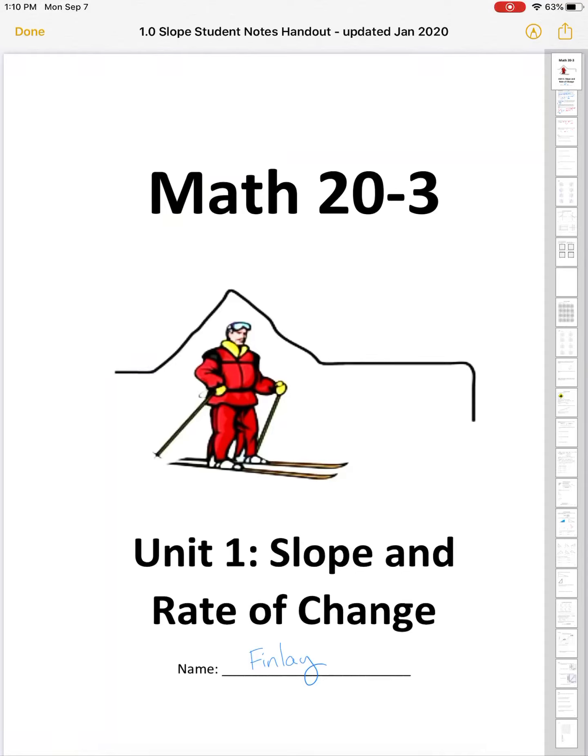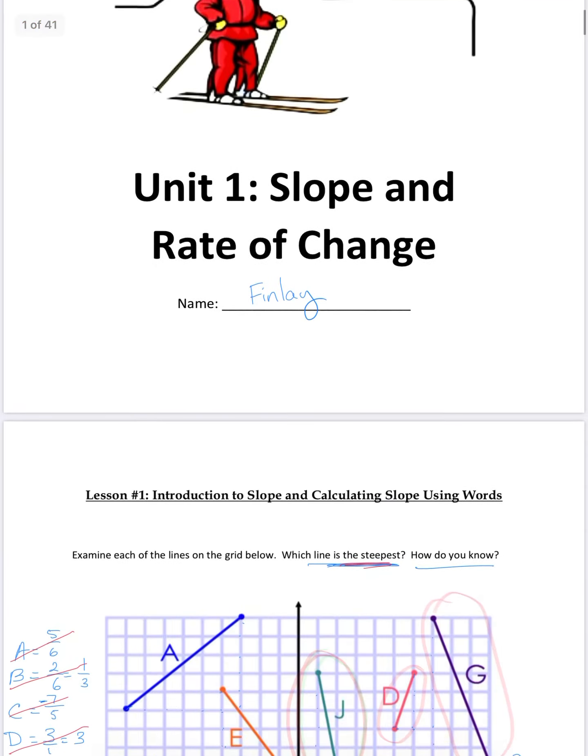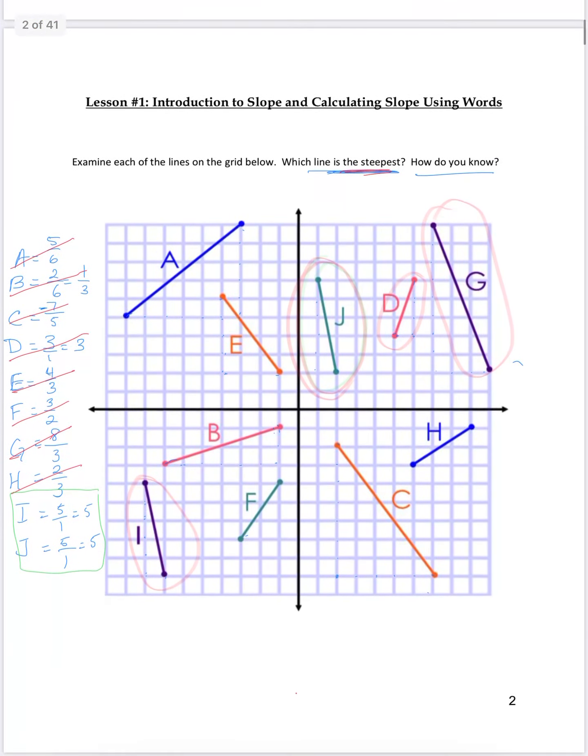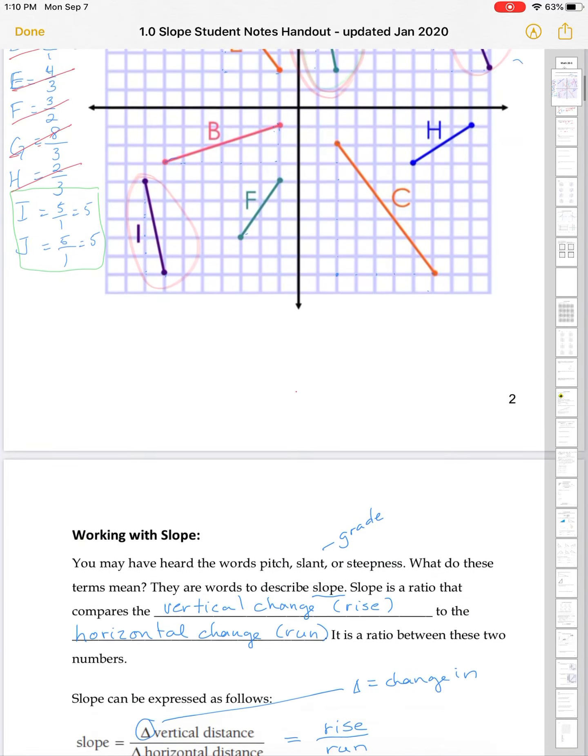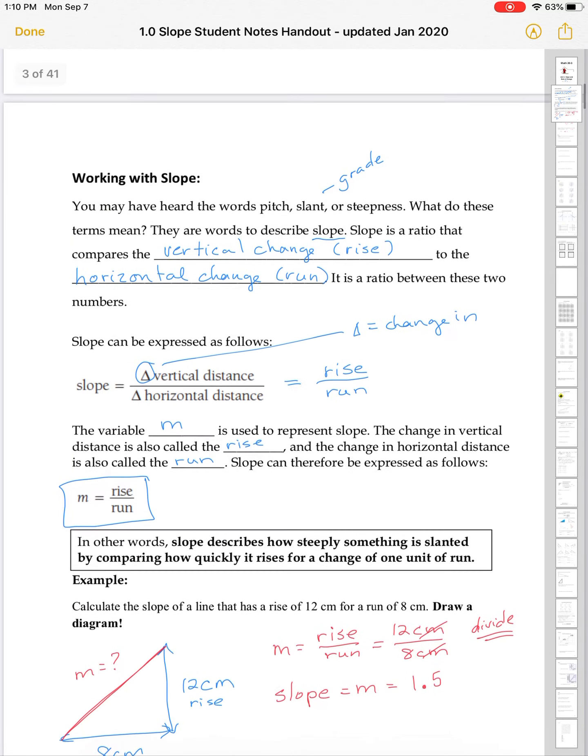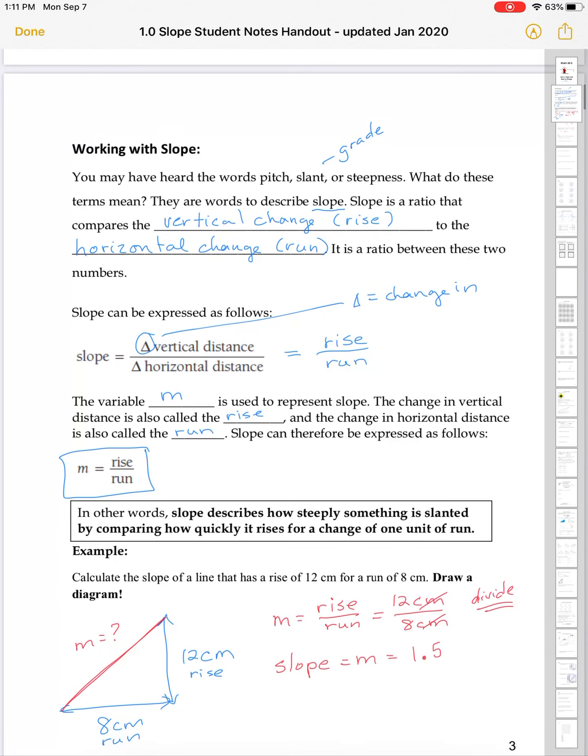Okay, so we're going to be doing Lesson 3 of Slope and Rate of Change. Remember we started talking about slope, talking about whether it was steep or not. So we're talking about the steepness of the line, and comparing slopes just in terms of which ones were steeper or less steep. We talked about different words for slope: pitch, slant, grade, steepness.